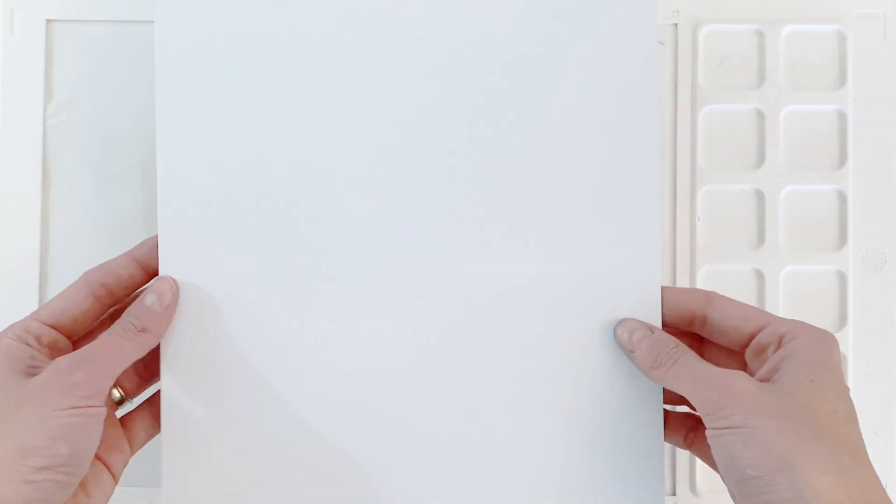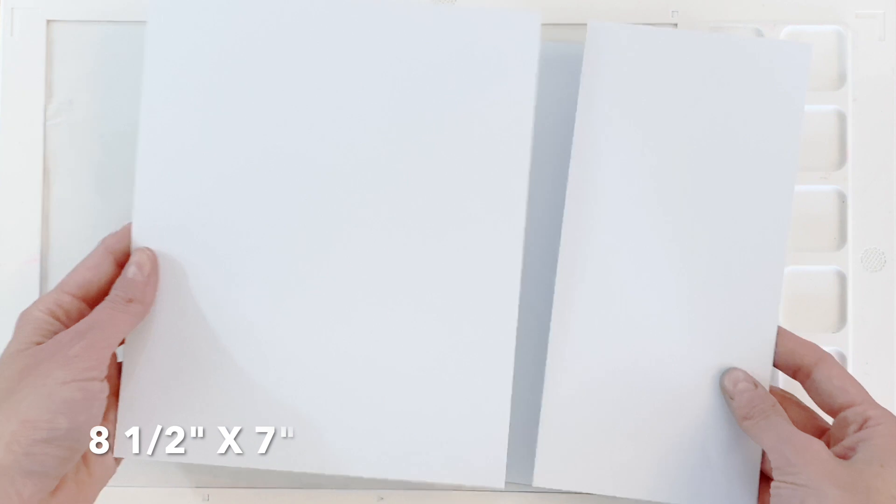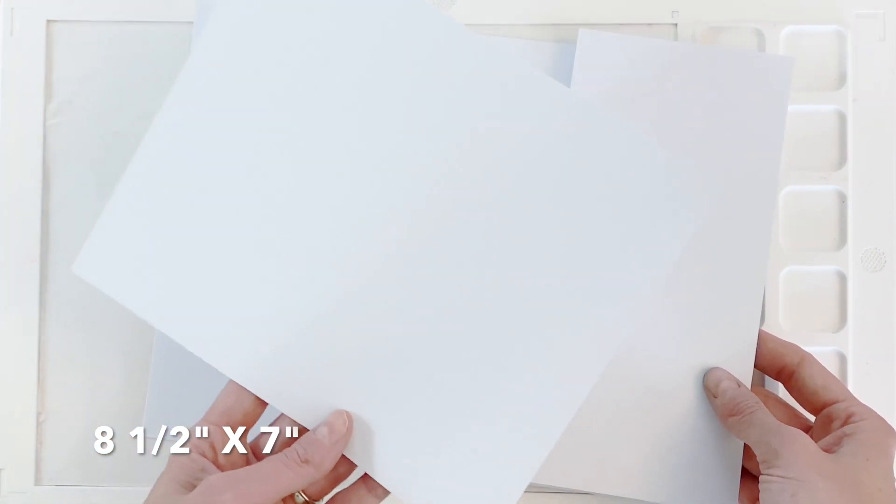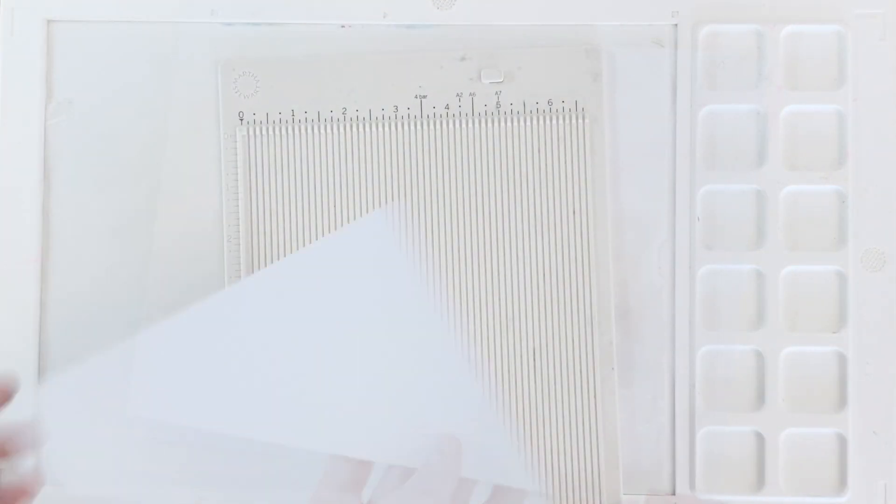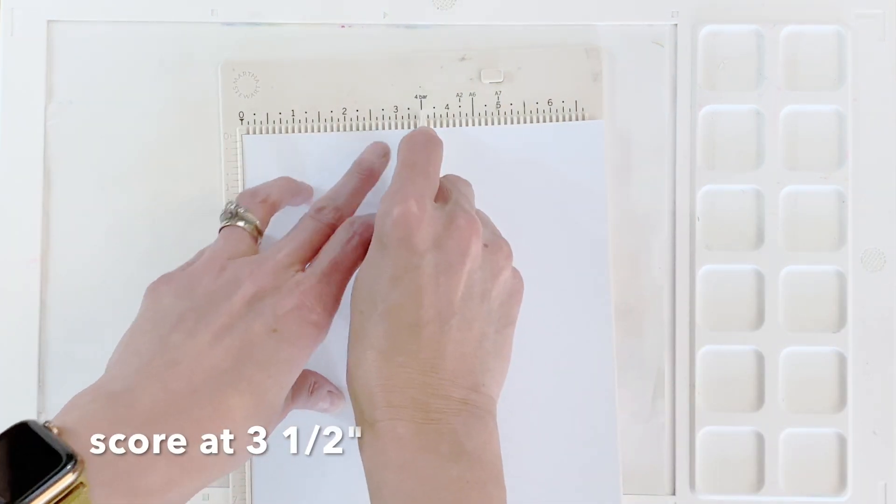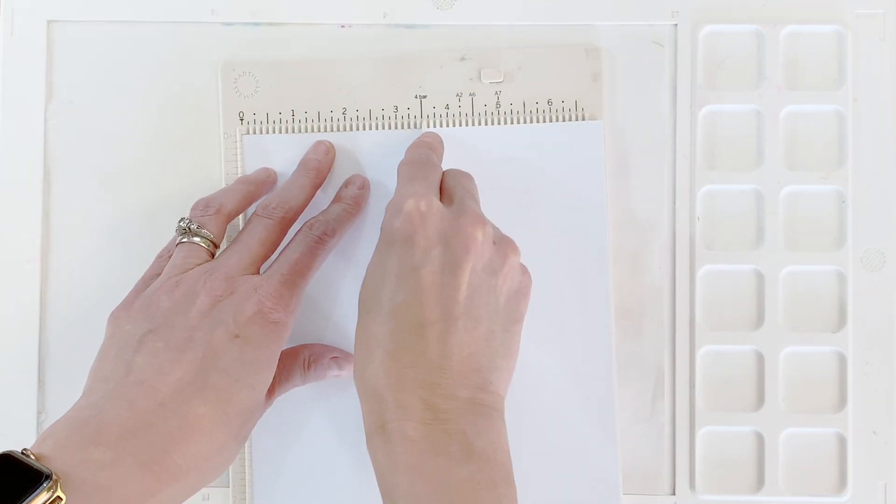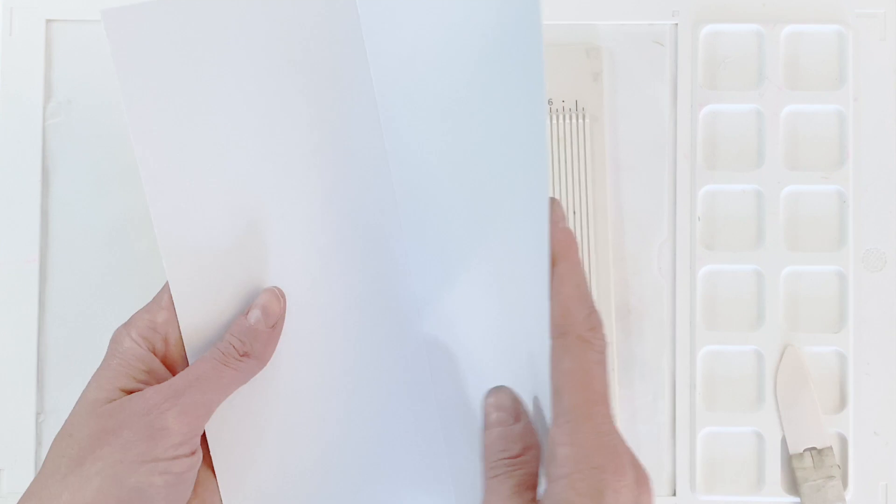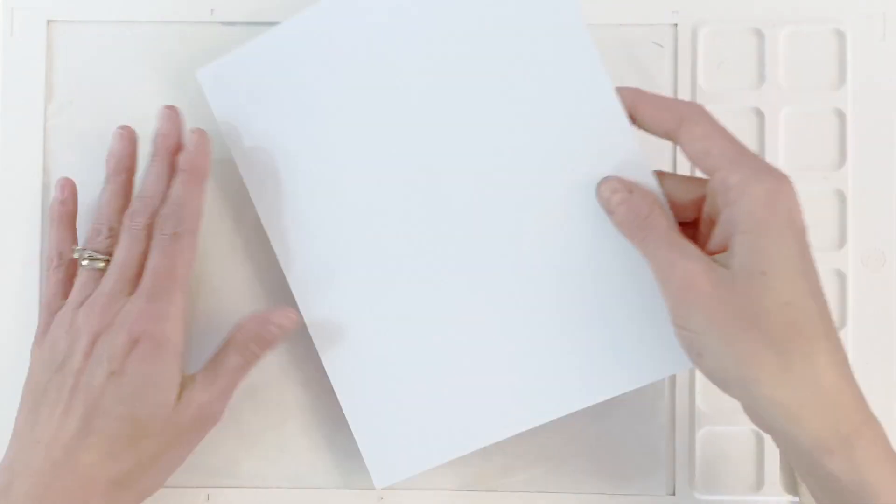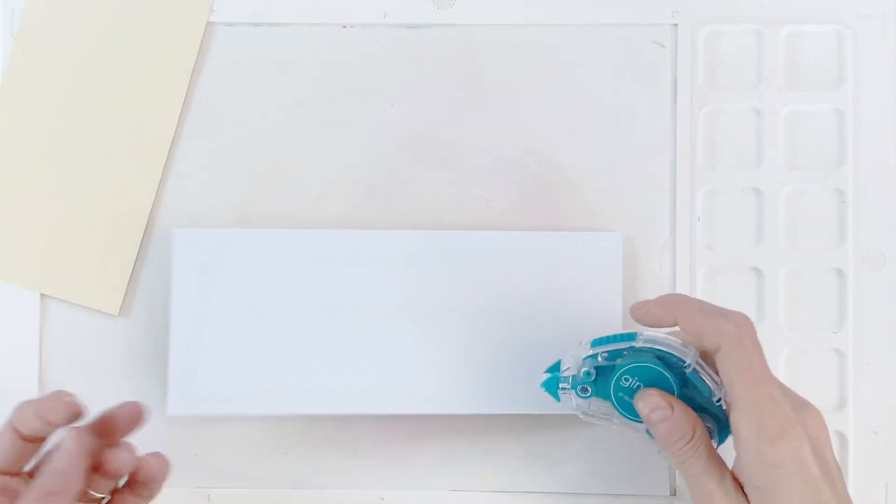I'm now going to move on to creating my card base for the slimline card. So here I have an eight and a half by eleven sheet of cardstock and I just want to show you how I cut this. I just cut off four inches so I'm left with an eight and a half by seven sheet and then I'm going to score at three and a half. So on the seven side that's where you're going to score down at three and a half and then just fold it over because this is so long I kind of had to rotate it because my scoreboard is not big enough for this sheet of cardstock and then I just fold it over and crease the fold and that's how you make a slimline card.